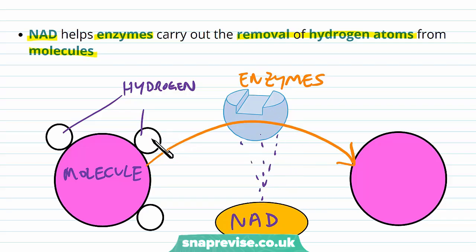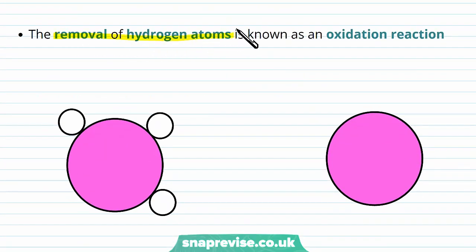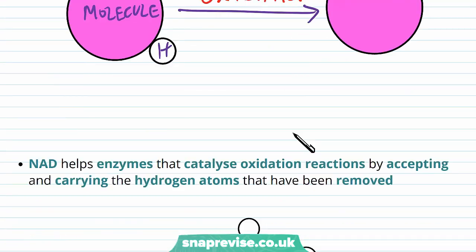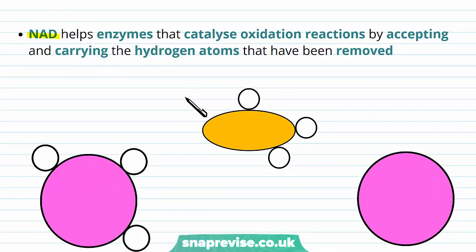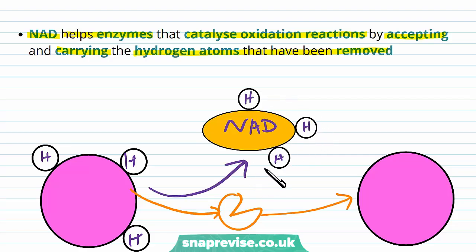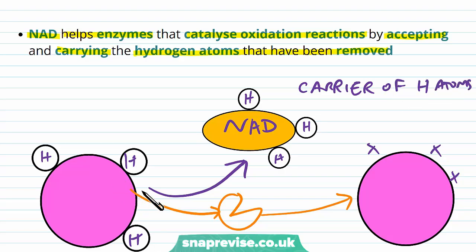So NAD is helping enzymes take hydrogens away from things. When we have a removal of hydrogen atoms, the type of reaction this is called is an oxidation reaction — anytime a molecule loses hydrogen atoms, this is oxidation. NAD helps the enzymes catalyze oxidation reactions by accepting and carrying the hydrogen atoms that have been removed. The enzyme focuses on removing the hydrogen atoms, while NAD takes the burden of carrying them.